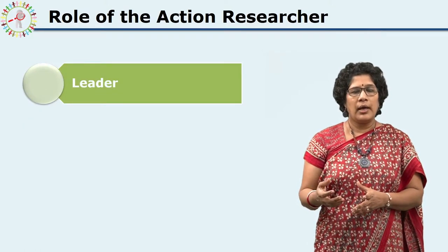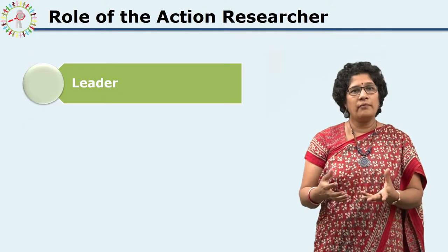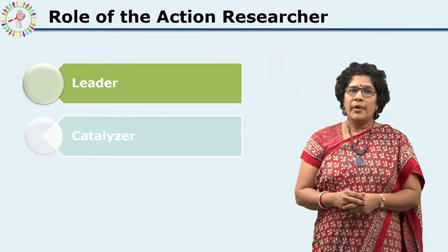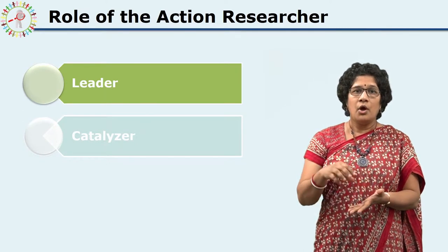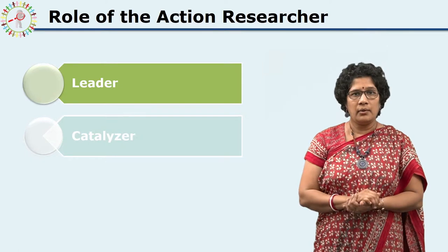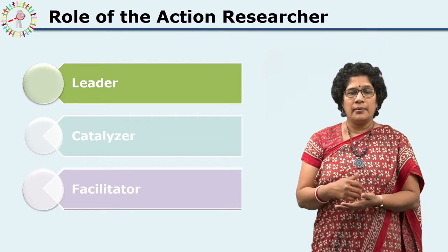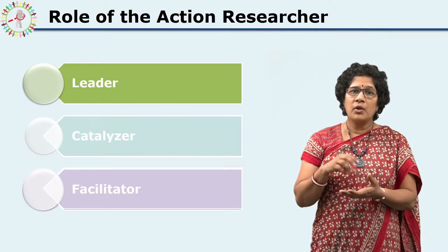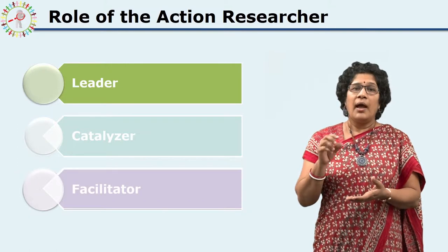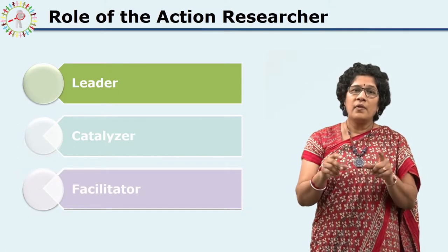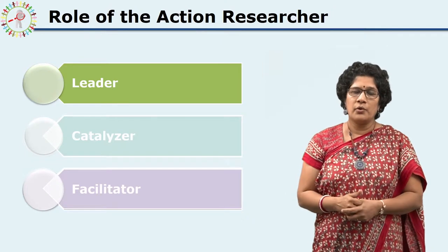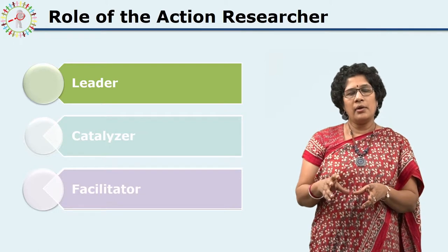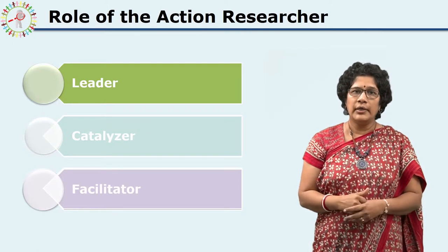The next role that the action researcher takes up is that of the leader. This role comes right from the beginning, because the action researcher identifies the situation which needs improvement, feels that the situation can be improved, and believes that he or she is the one who can do something about improving it. From this point of view, the action researcher plays the role of a leader.